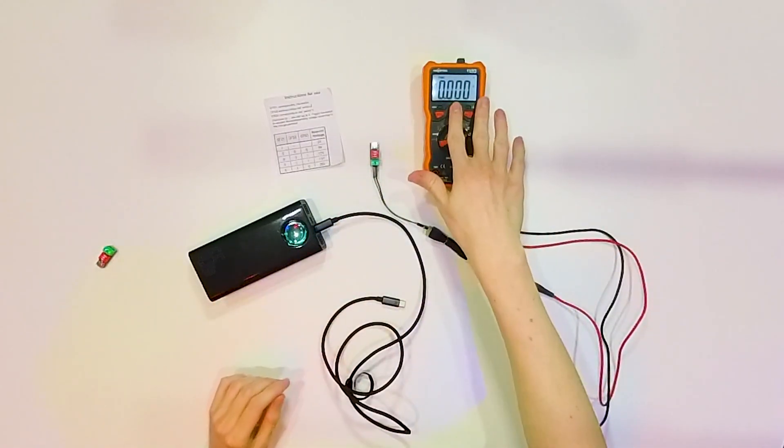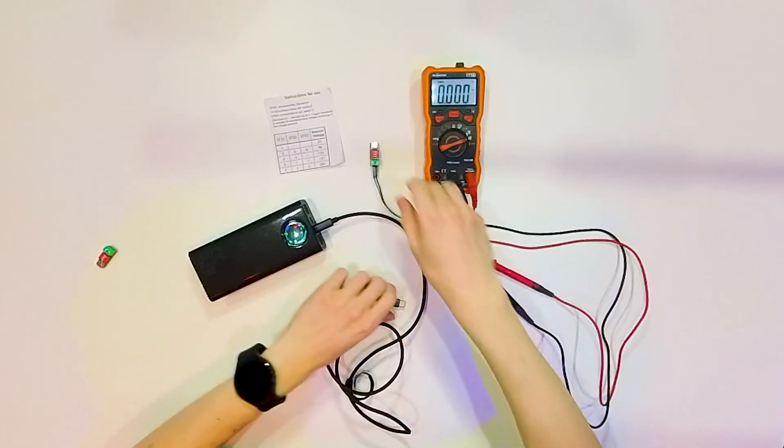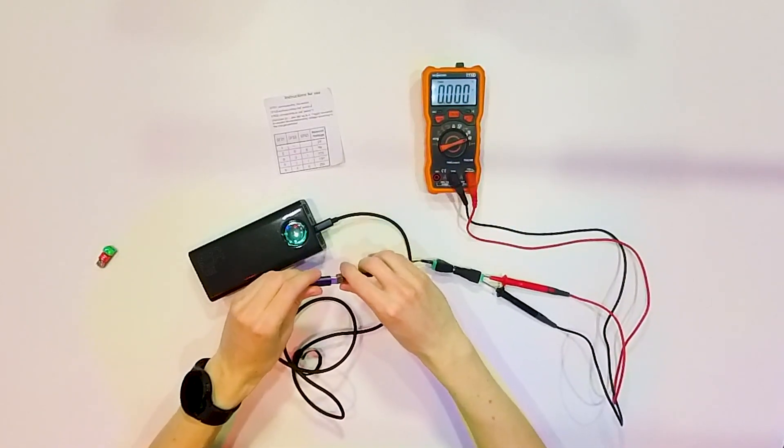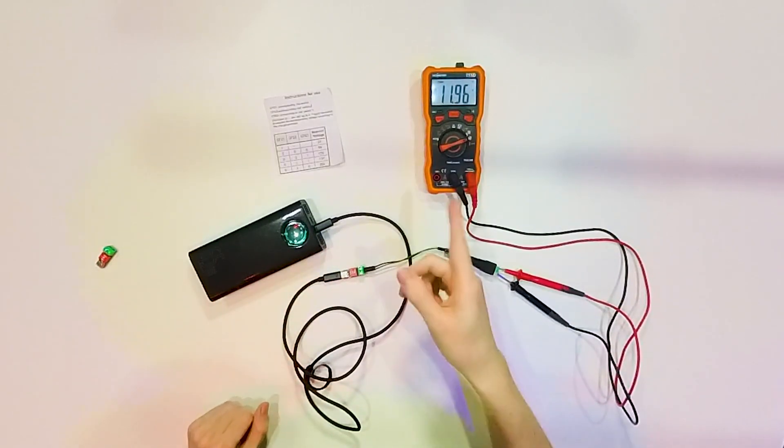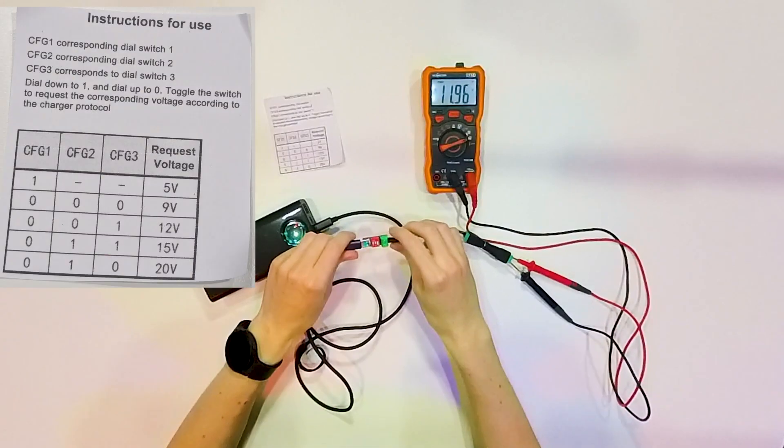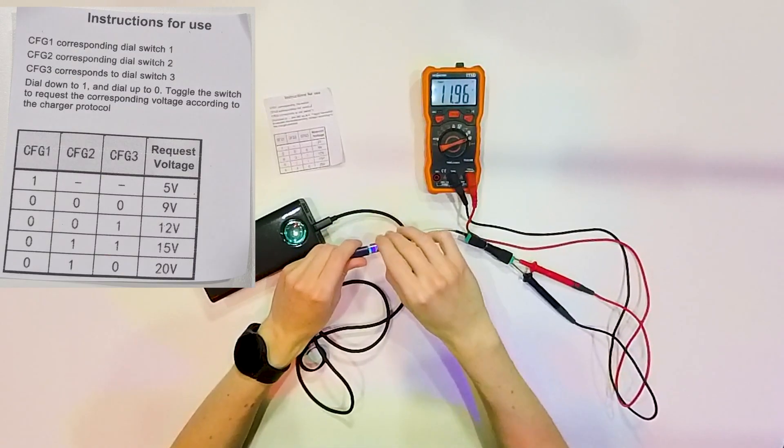Now it's disconnected, so it shows 0V. Let's plug it in. And I have now 12V, but I can change the combination.